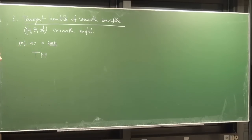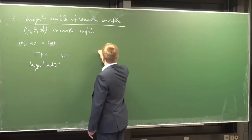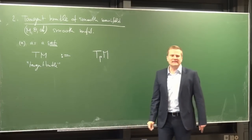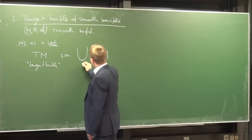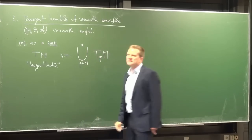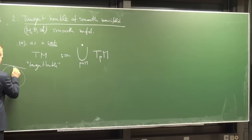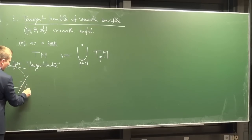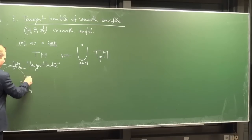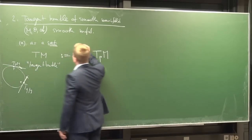Why a disjoint union? A vector in T_pM is quite a different thing from a vector in T_qM. If you throw them all into a bag, you still know this vector is a different thing from that one — they remain distinct objects. That is the disjoint union. This is just a set — the total space we'll call TM because we constructed it from M.